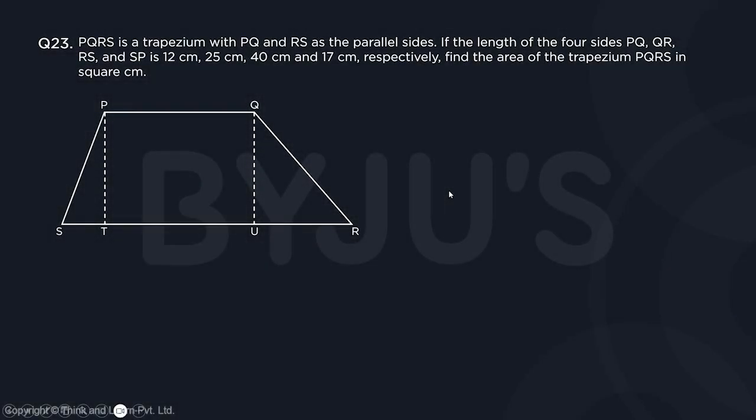Question number 23. PQRS is a trapezium with PQ and RS as the parallel sides. If the length of the four sides PQ...